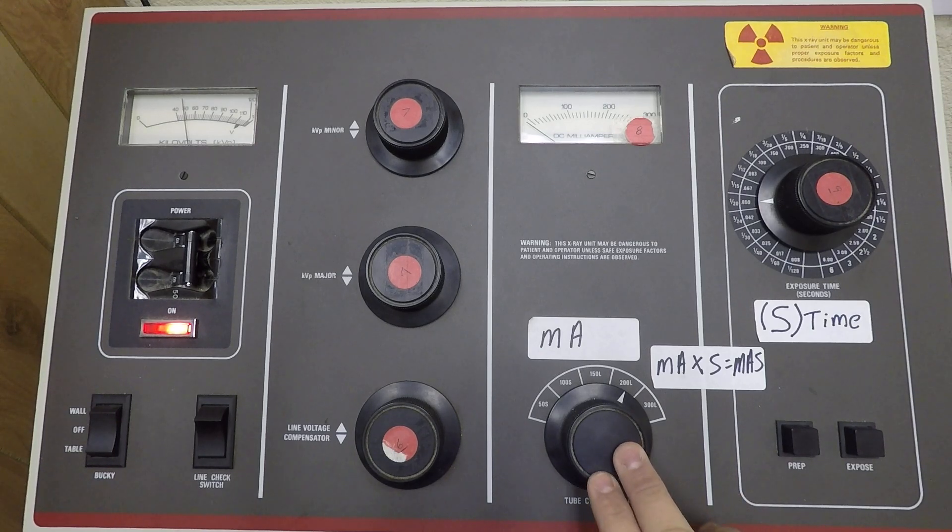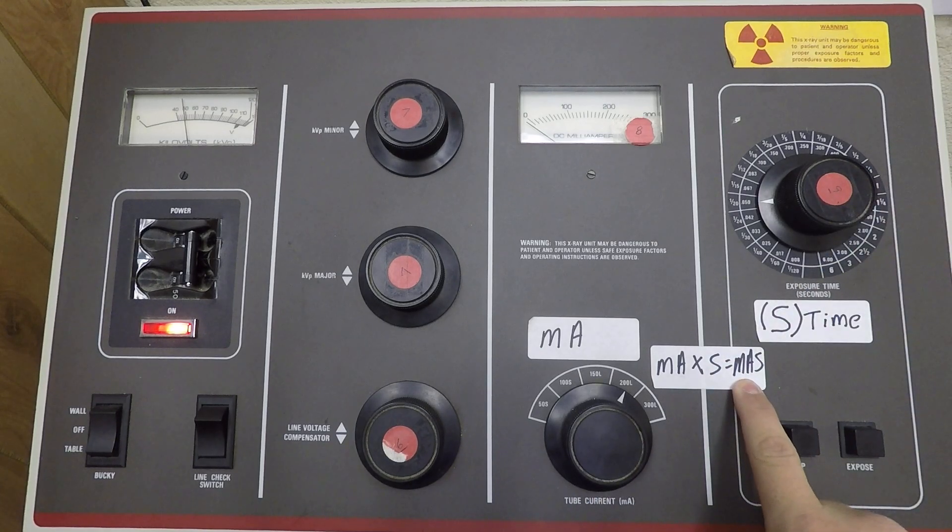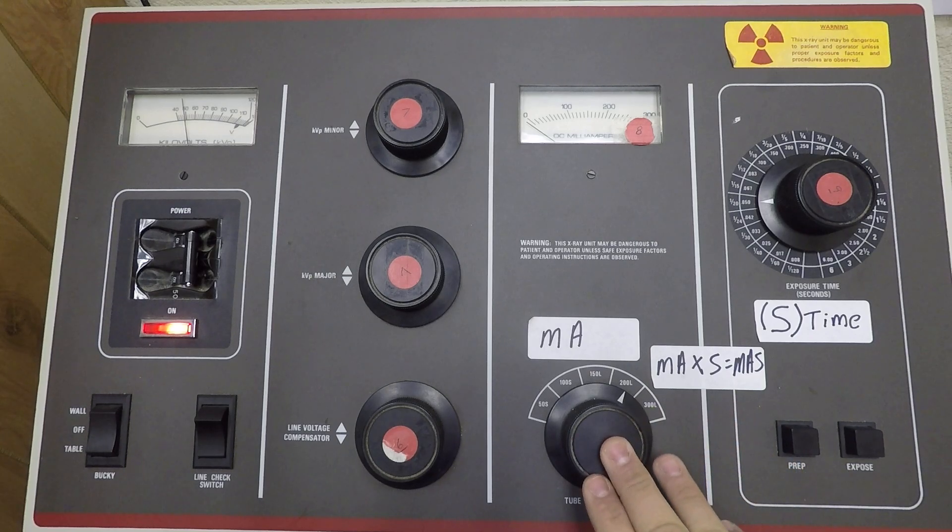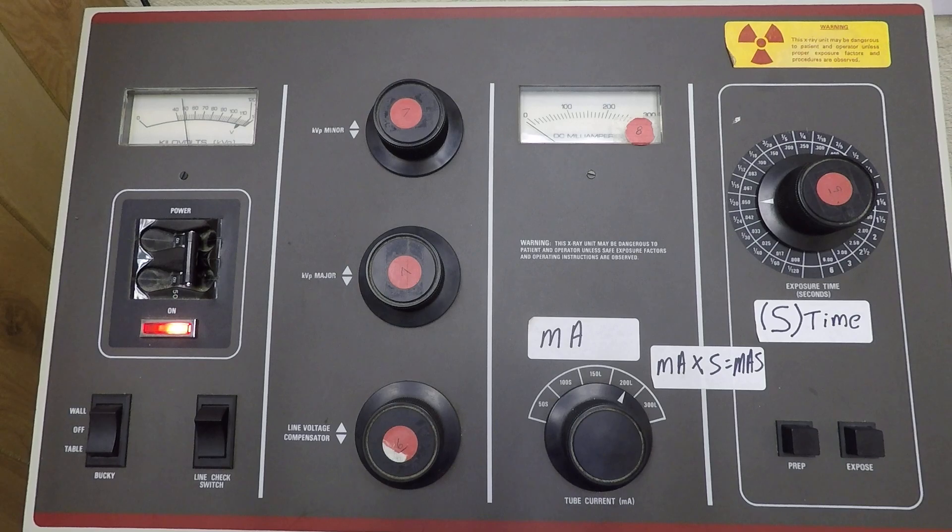In the last video, I discussed setting MA and time to get your mass number. What we learned from that is that mass changes are direct and proportional. If I double mass, then I double the quantity of x-rays produced.